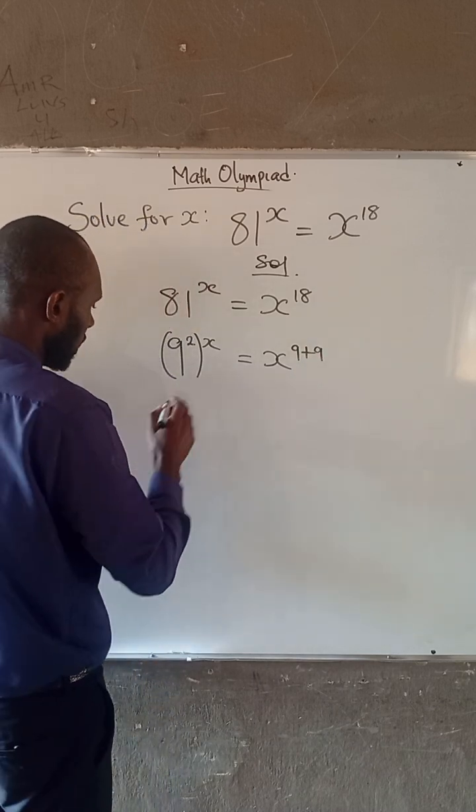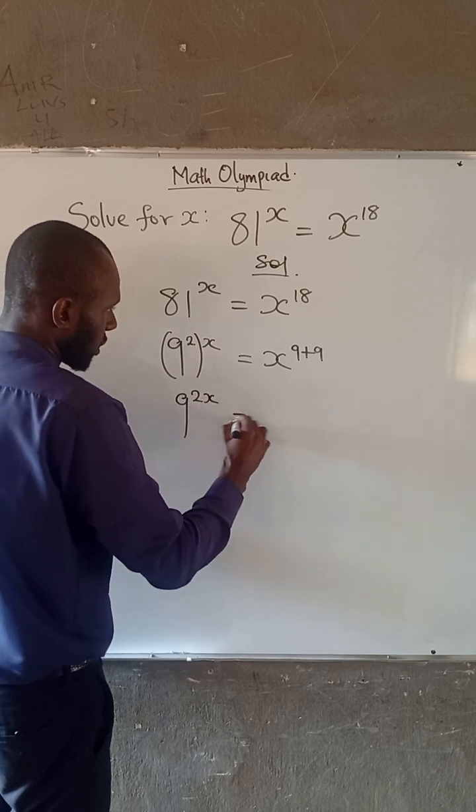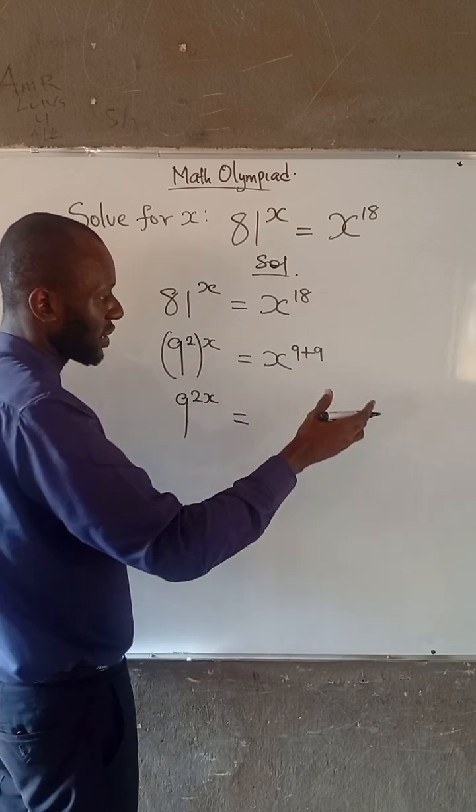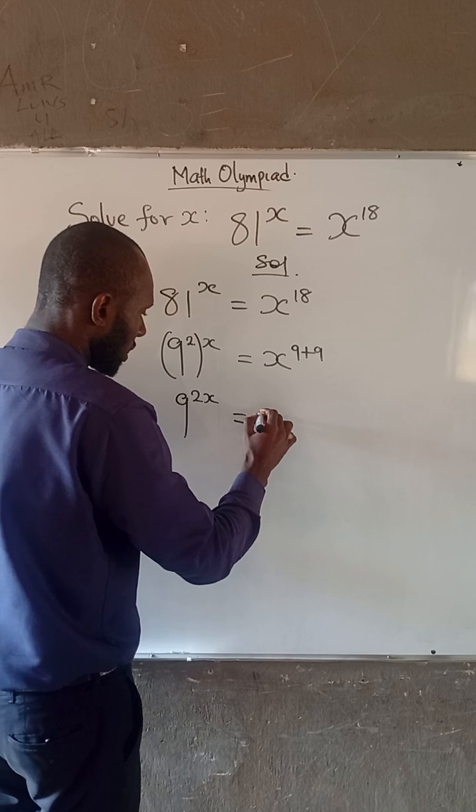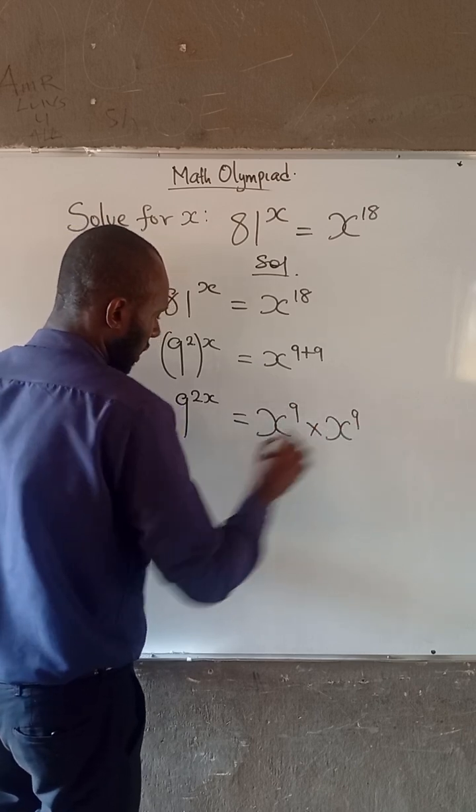Now at this point we have that 9^(2x) equals... From laws of indices, this can be written as x^9 times x^9.